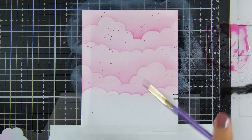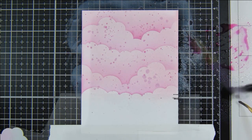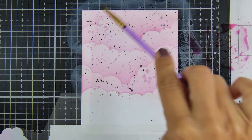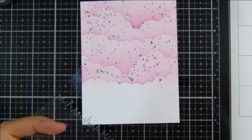I've smooshed on some picked raspberry distress ink and black soot distress ink onto my glass craft mat, loosened it with some water, and splattered that on.